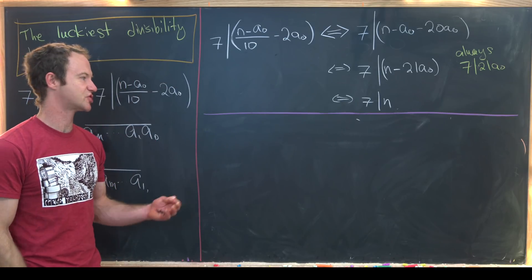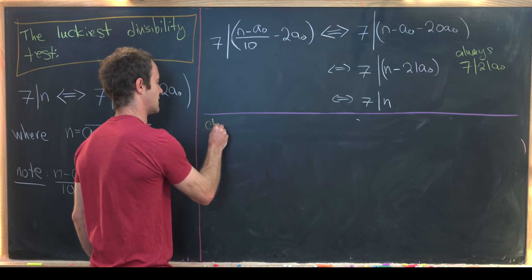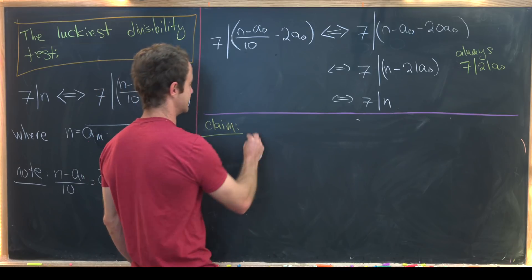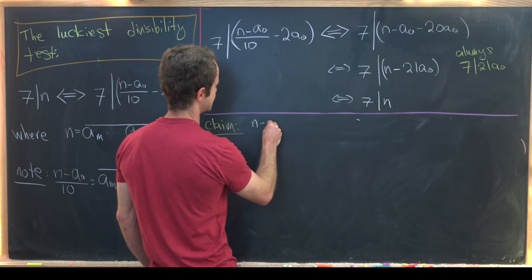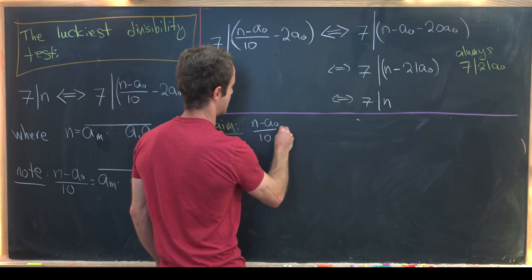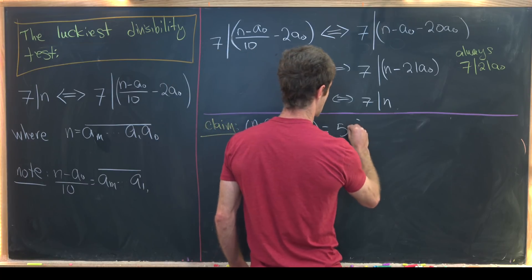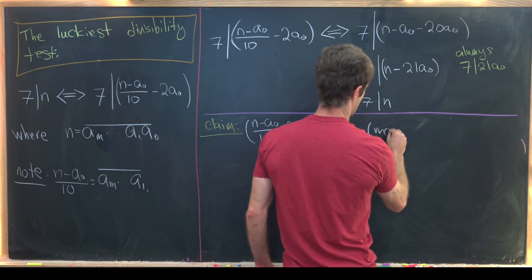So now we're going to prove a slightly stronger and more general statement. So I'll call that the following claim and that is that n minus a naught over 10 minus 2 a naught is congruent to 5n mod 7.